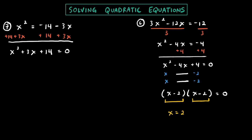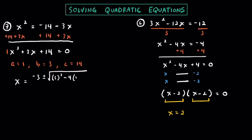In this case I can't think of anything that multiplies to 14 that adds to get to 3, so it's not going to work here. We're going to have to use the quadratic formula instead. I'm not going to use completing the square because b is odd. We have a leading coefficient of 1, so a equals 1, b equals positive 3, and c equals positive 14.